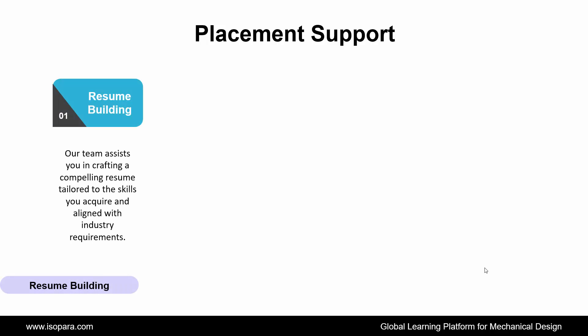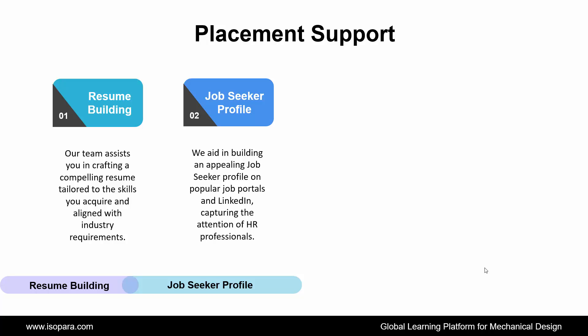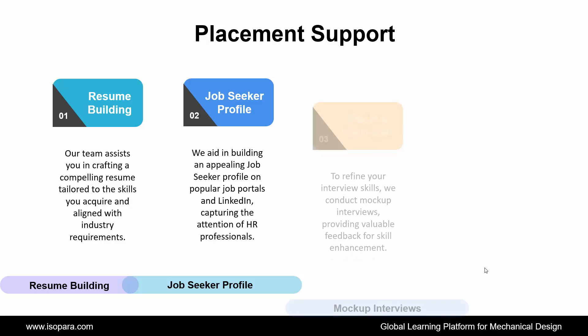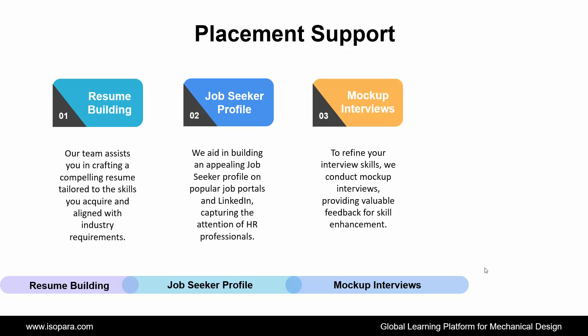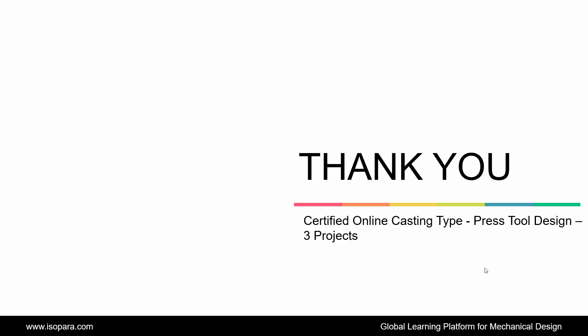For placement support, we assist with capturing the attention of HR professionals. Third is Mock-up Interviews: To refine your interview skills, we conduct mock-up interviews, providing valuable feedback for skill enhancement. And the last is CAT Test Check: Review your CAT test, embrace feedback, and enhance your skills — turn insights into growth for continuous self-improvement. This is all about the Certified Online Casting Type Press Tool Design with three projects in CATIA or UGNX. If you are seeking counseling from an industry expert, feel free to contact us. Thank you.